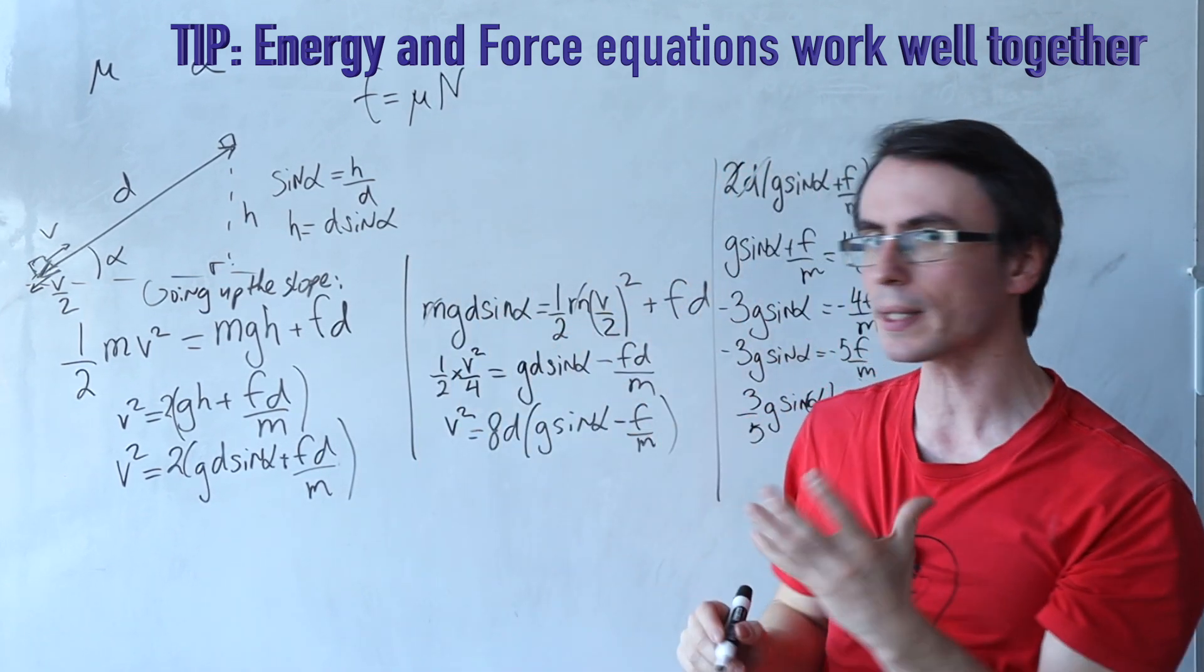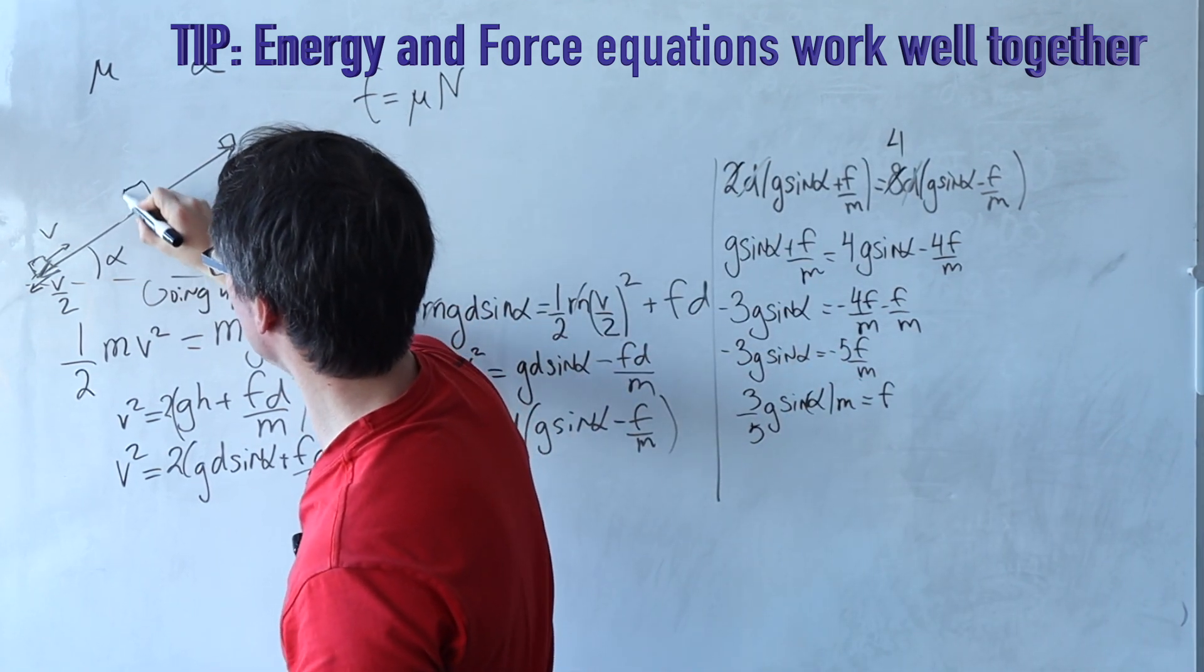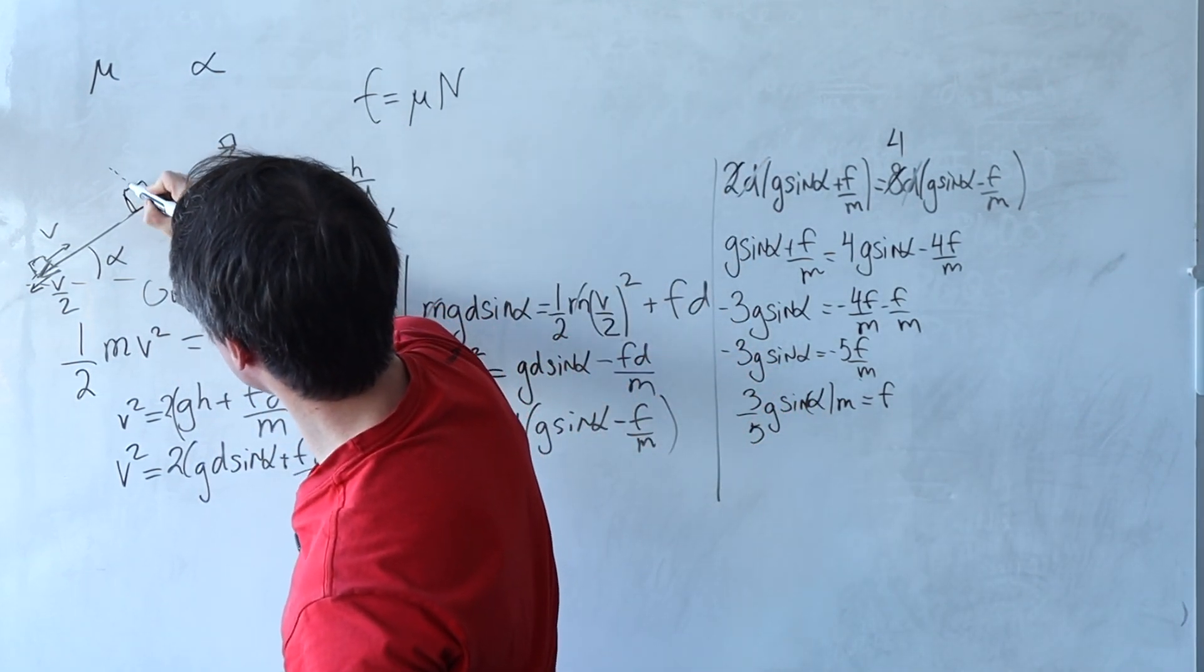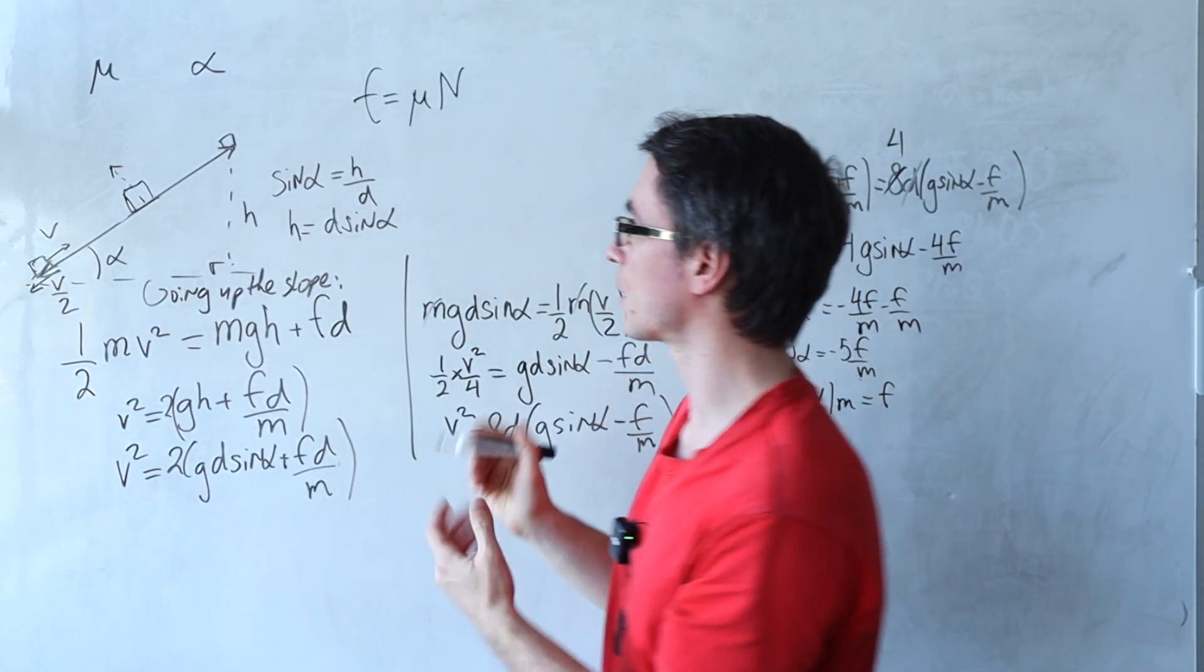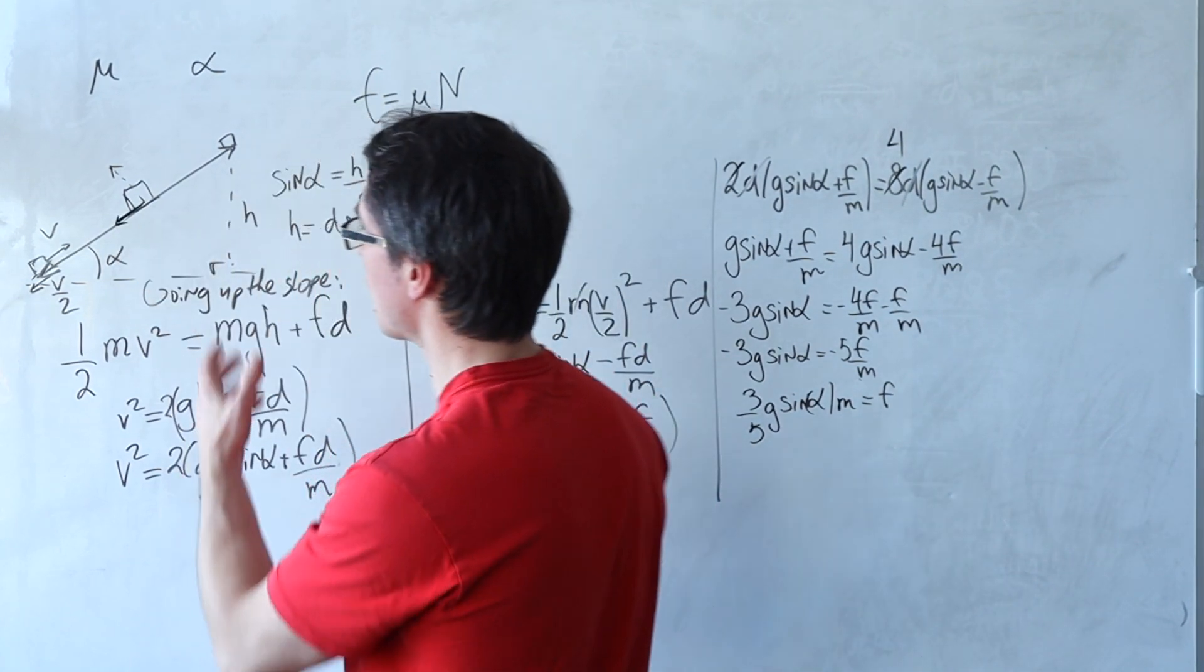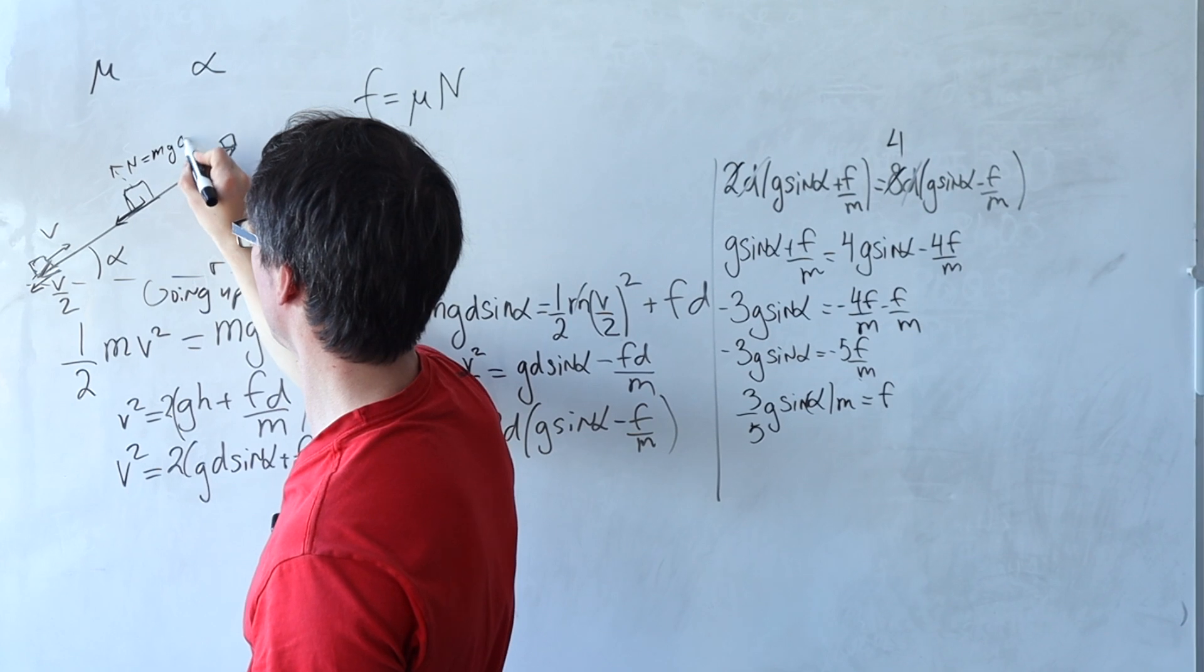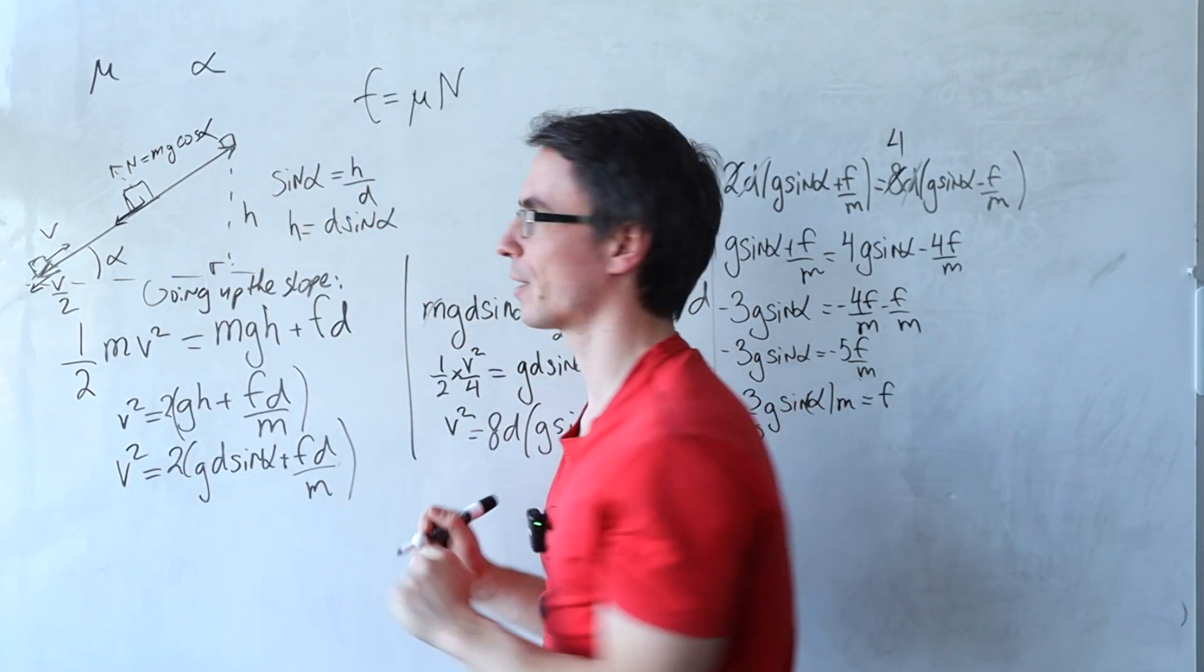But the normal reaction in this case is not going to be just equal to mg. Why is that? Because this thing is now actually at an angle. So the normal reaction n is going to equal the perpendicular component of the weight with respect to the ramps. The parallel component is mg sine theta. The perpendicular component equal to the normal reaction is just going to be mg cos of alpha, not theta, excuse me.